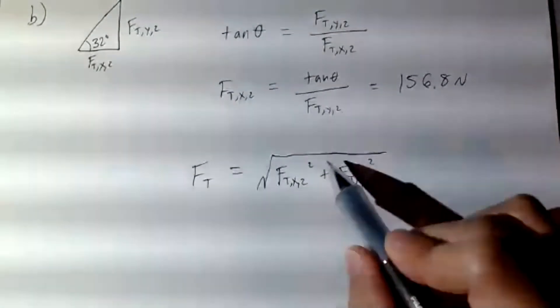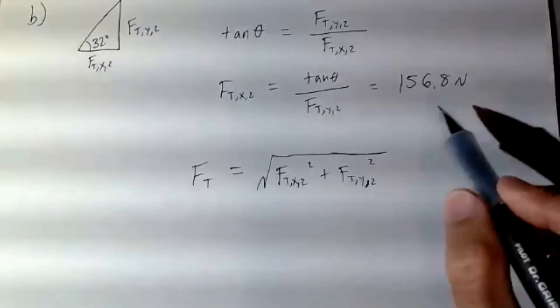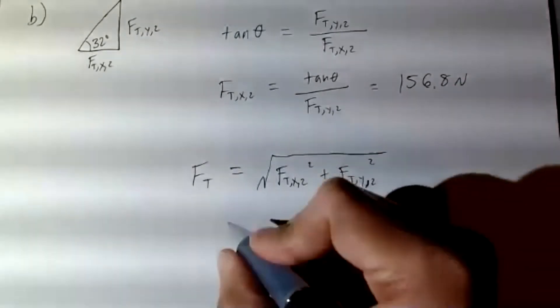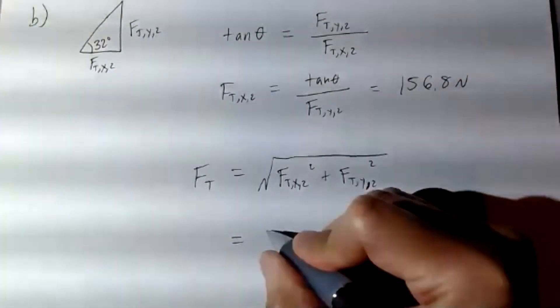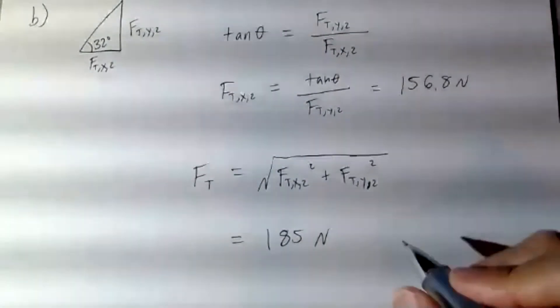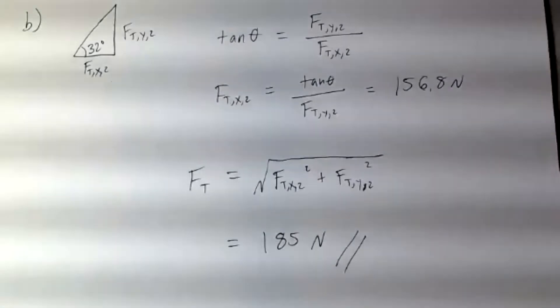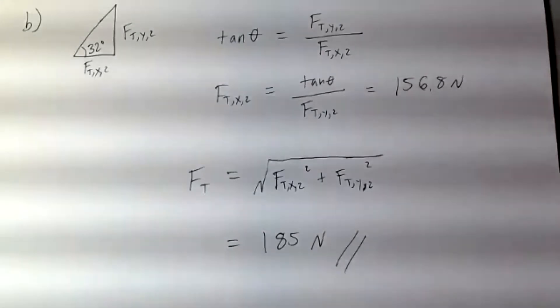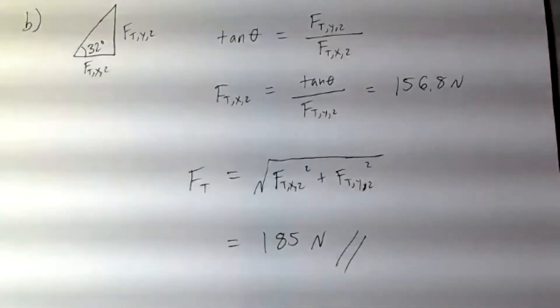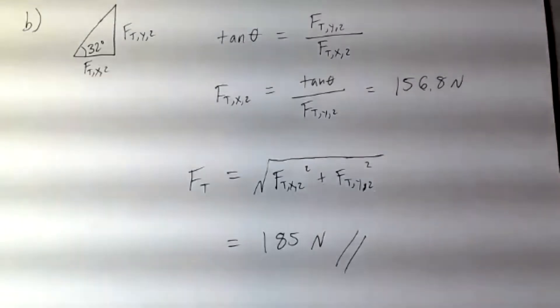So now if we were to take the Pythagorean theorem of these two numbers, the y and x component respectively, we will be able to calculate the total tension of the rope to be 185 newtons. And that's going to evidently be the tension that is acting on the second rope, which is then the force acting on the rightmost wall.